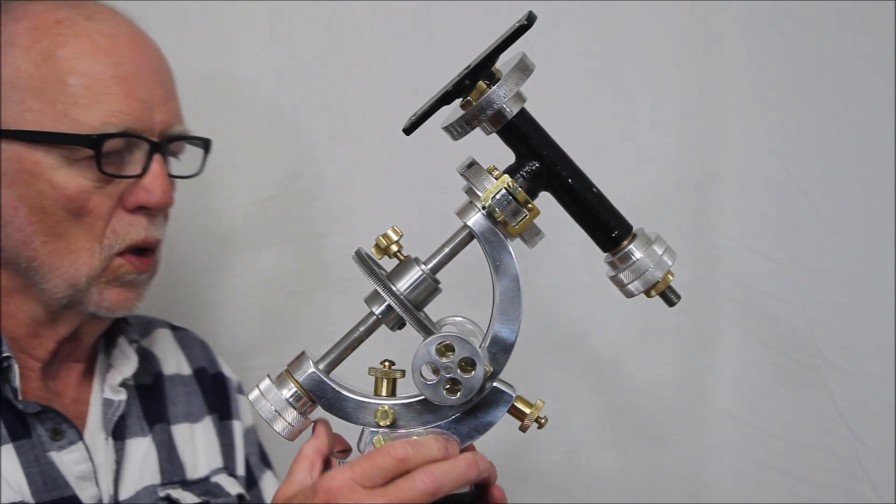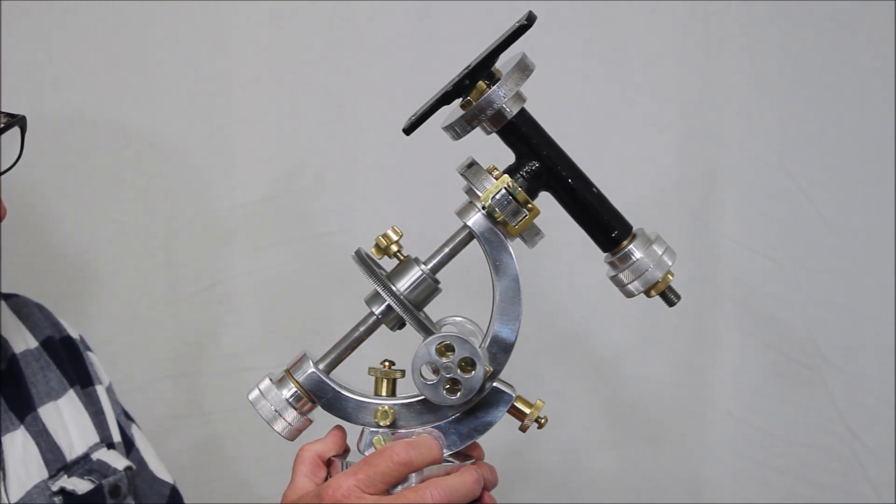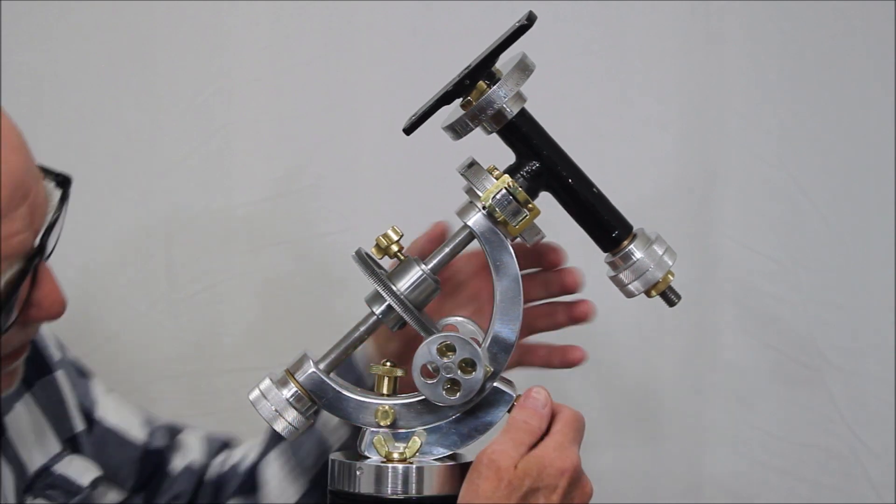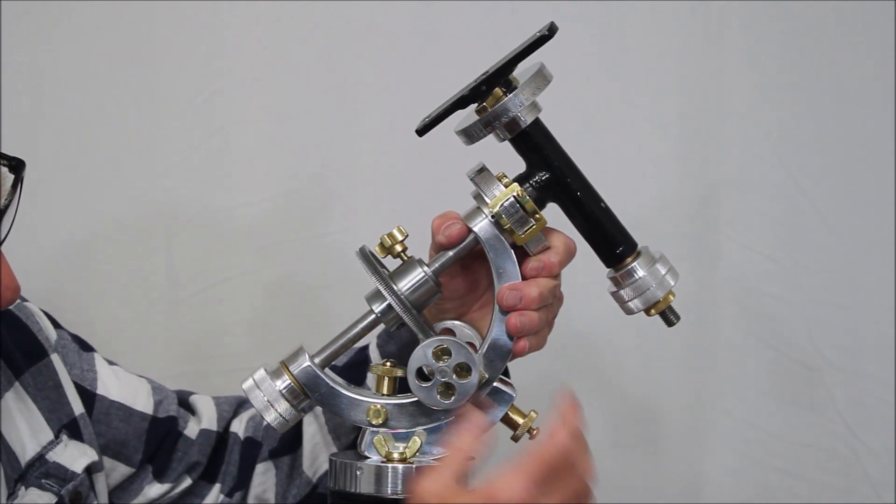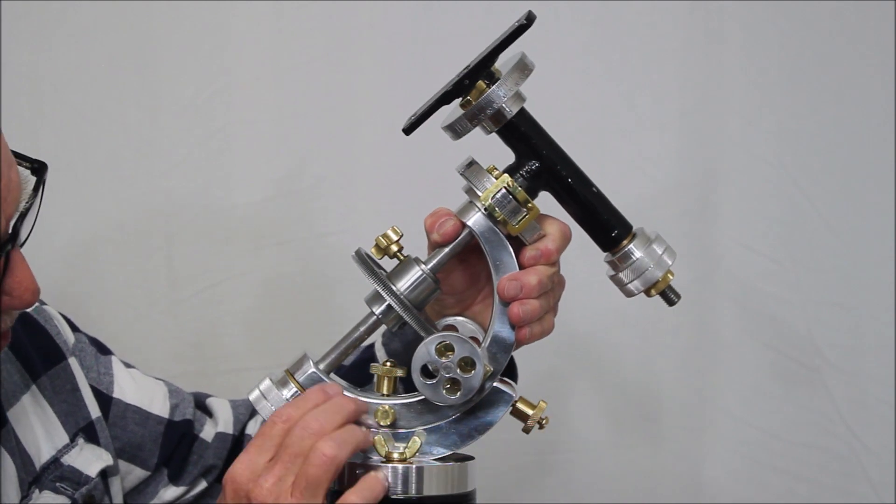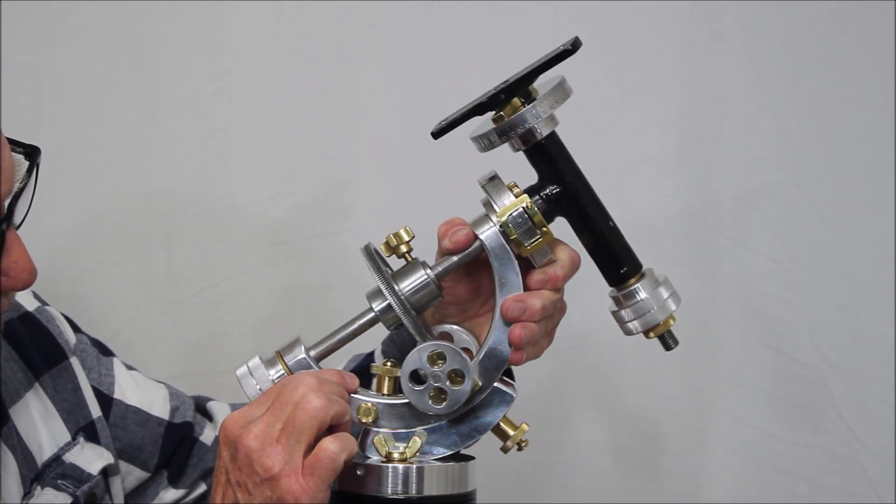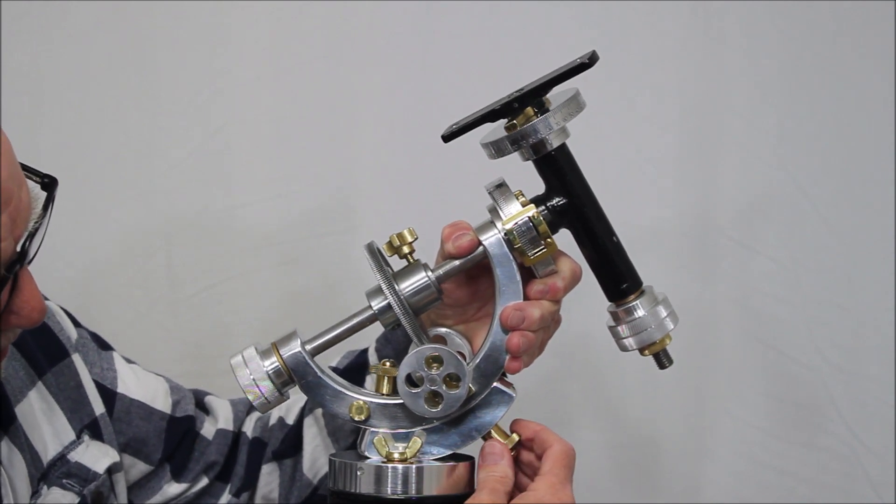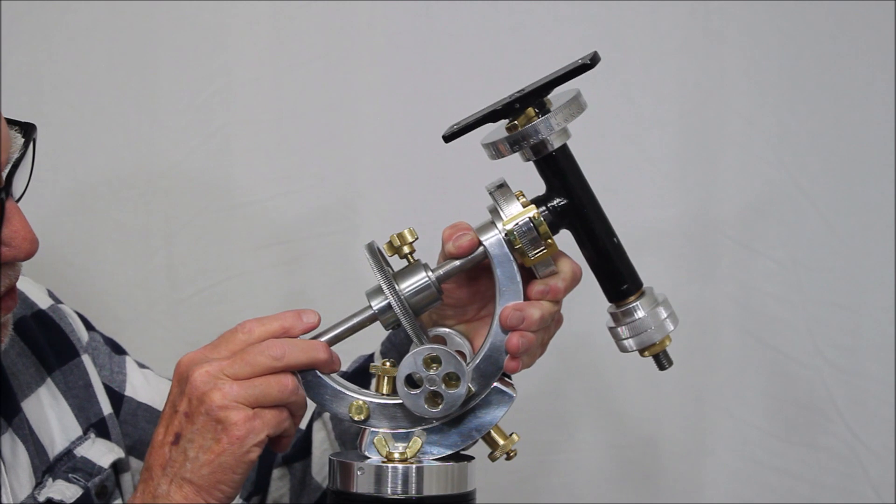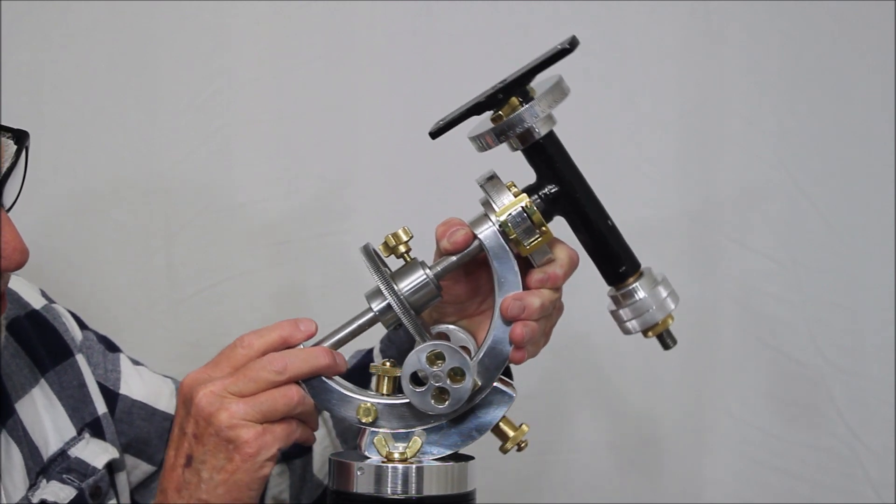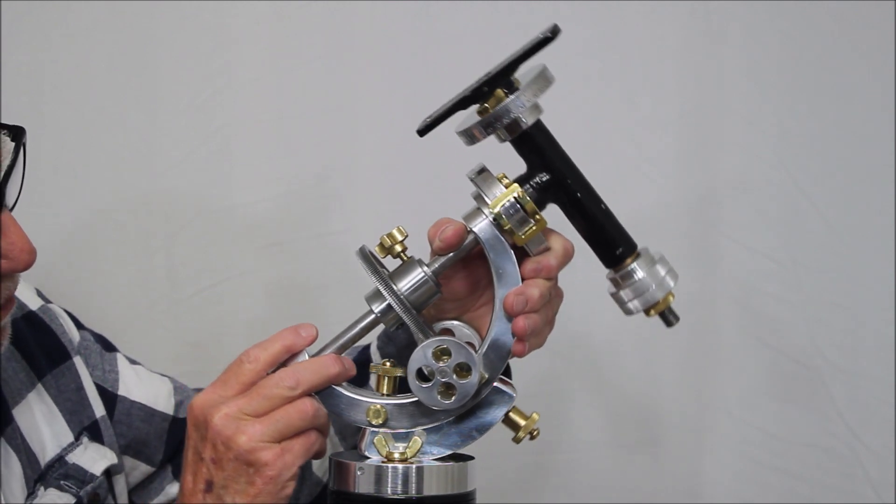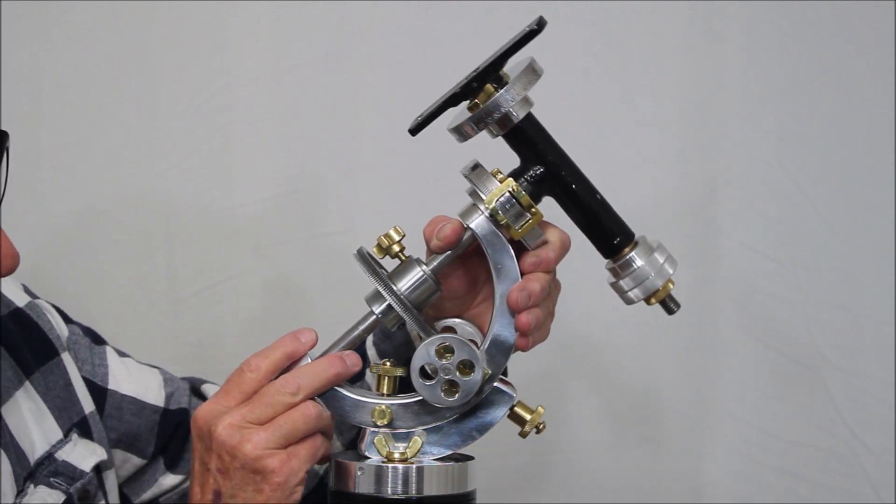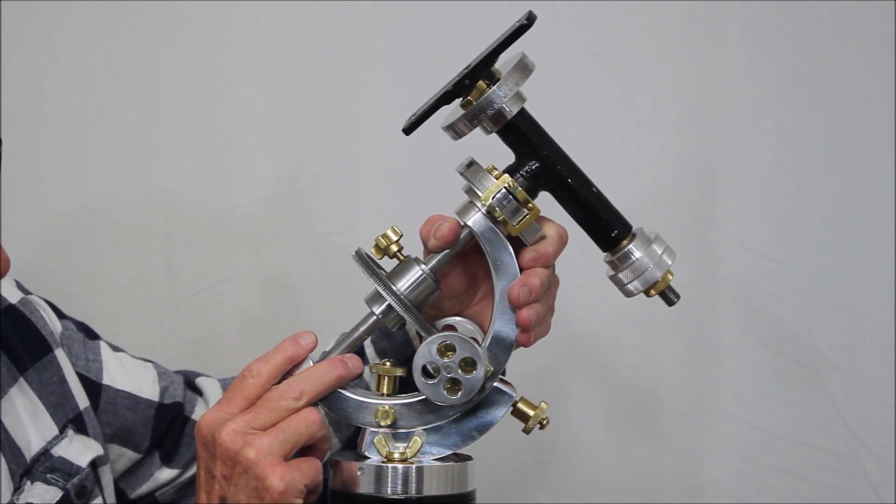Now, let me show you how this works in terms of adjustment for latitude. If you want to change the latitude, there's a couple of locking bolts here. Once you unlock those, you can change the latitude. There are actually two different ranges. This gives you about maybe 10 degrees of latitude here from maybe 40 on up to 50 or 60.